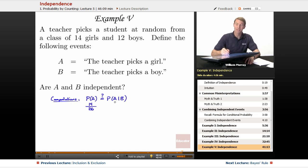Now what's the probability of A given B? That's the probability that if you know that you picked a boy, what's the probability that you picked a girl? Which is zero. Well, is 14 over 26 equal to zero? Of course not. So that tells us that the events are not independent, in fact, they are dependent.